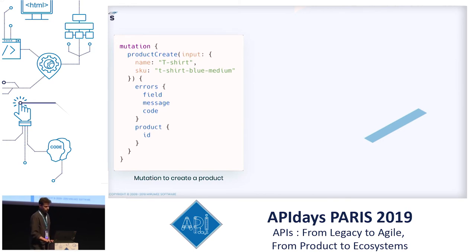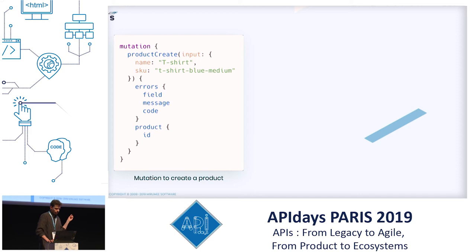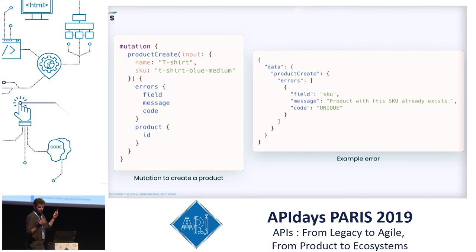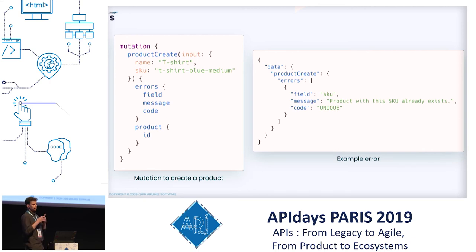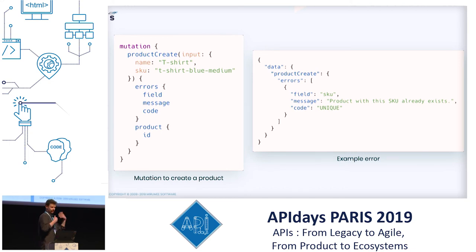For example, in a ProductCreate mutation taking name and SKU — SKU is stock keeping unit, used in e-commerce to identify products — every error in the response consists of three fields: field, message, and code. The message is for the developer, not the UI, and the code — like 'unique' — is an enum value the frontend can use to render the proper validation message. The frontend can know in advance what error types can occur during that mutation.